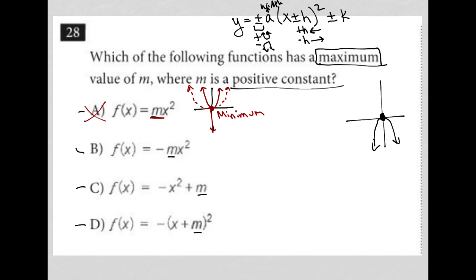So if you have a term here away from the squared, outside of the parentheses, a positive k means you're shifting up k units. And a negative k means you're shifting down k units.